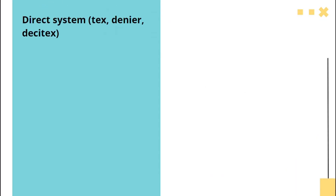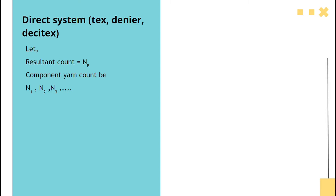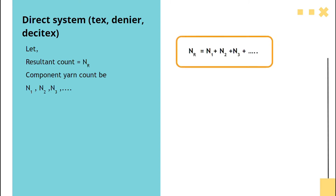Denier, and Decitex — let the resultant yarn count be Nr and the component yarn counts be N1, N2, N3. Then the formula for the direct system is: resultant yarn count equals the sum of the individual yarn counts, that is Nr equals